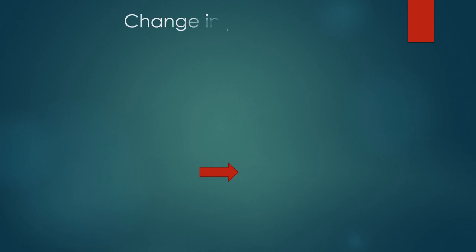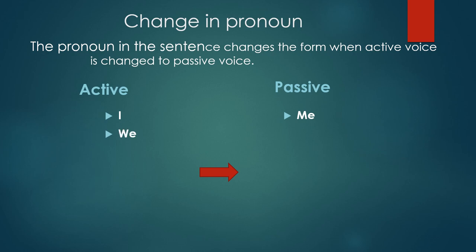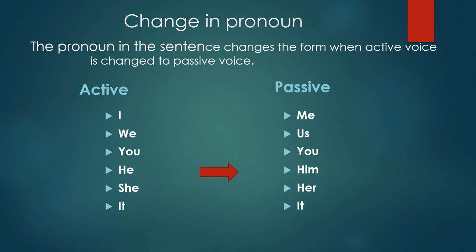When active voice is changed to passive voice, the pronoun in the sentence changes its form. In active voice: 'I' becomes 'me' in passive voice. 'We' becomes 'us'. 'You' remains as 'you'. 'He' becomes 'him'. 'She' becomes 'her'. 'It' remains as 'it'. And 'they' becomes 'them'. This is the change in form of the pronoun.